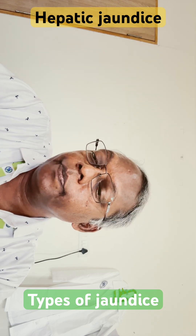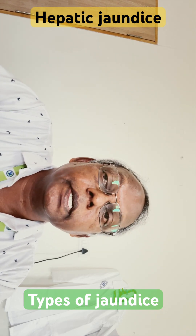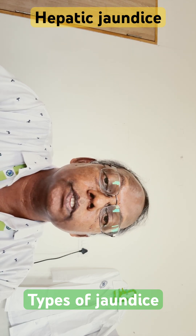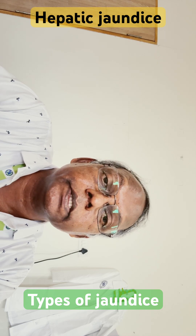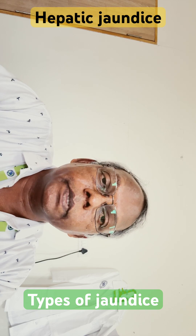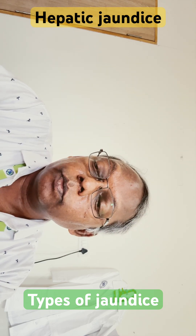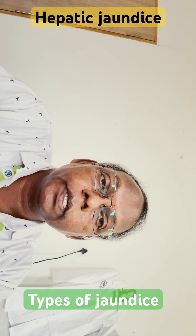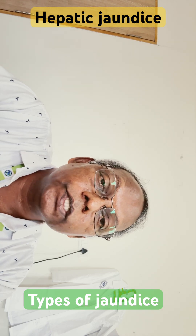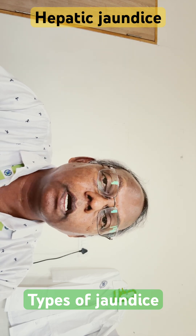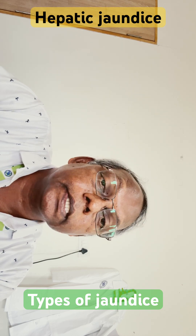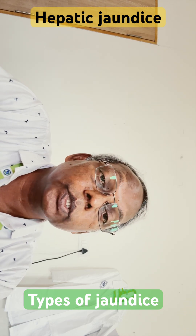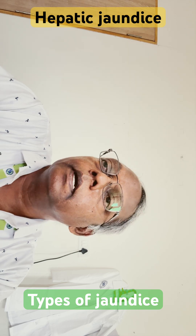The key findings in hepatic jaundice: first, serum bilirubin — both conjugated and unconjugated bilirubin are elevated, which is a very important finding. Second, urobilinogen — since there is no significant hemolysis, urobilinogen is decreased in both urine and feces.